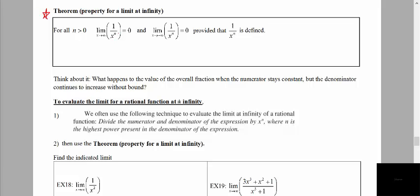We want to look at what happens when we evaluate a limit of a function towards positive infinity when at the top of the fraction we have a constant and at the bottom we have a variable. If we are sending that variable to positive or negative infinity, then the value of the fraction — the y values — will get smaller and smaller and actually approach a y value of 0.